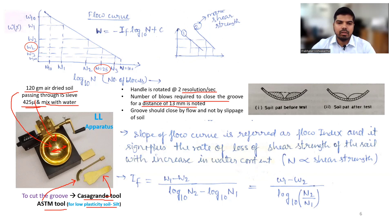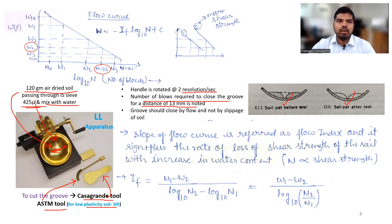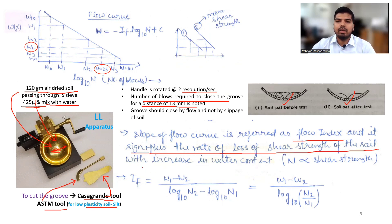There are two tools to cut the groove: the Casagrande tool and the ASTM tool. The ASTM tool is for low plasticity soils like silt, while for other soils we use the Casagrande tool. We cut the soil with the Casagrande tool, and after the test the soil sample closes together. For different water contents, we have different N values, which we plot to get the flow curve or flow line.